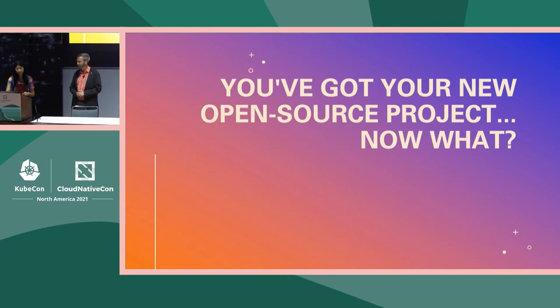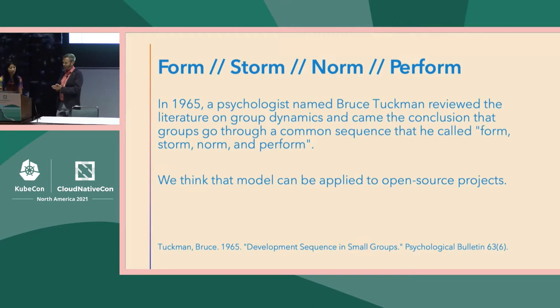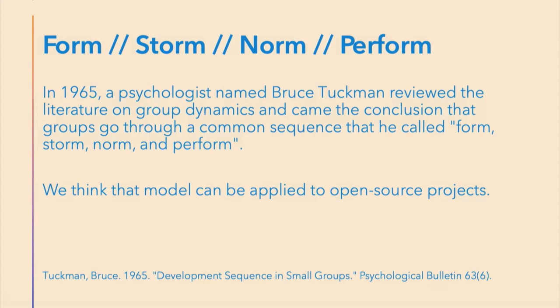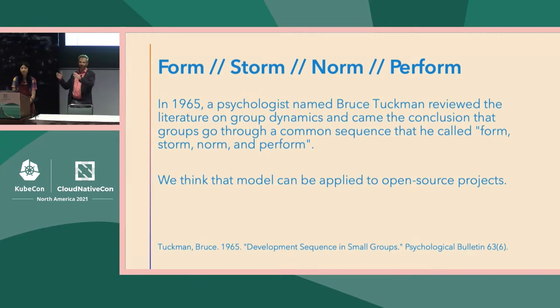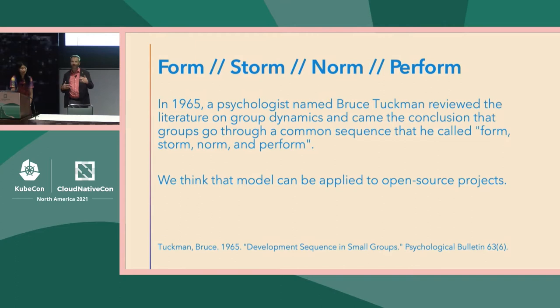The framing for our presentation comes from a psychologist who in 1965, Bruce Tuckman, surveyed the psychological literature on how groups form and then how they become productive. Tuckman analyzed all of this literature and believes he sees a pattern common to almost all kinds of groups that form. He says there are four very distinctive phases: forming, followed by storming, followed by norming, and concluding with performing. You may have run into this theory in literature on startups or group therapy. We thought it might be fun to see how it applied to open source projects.